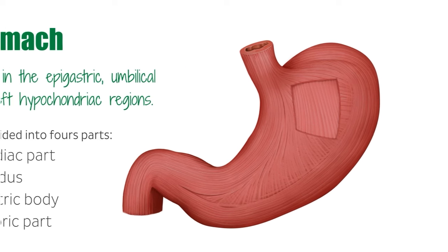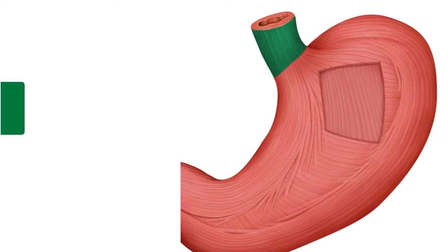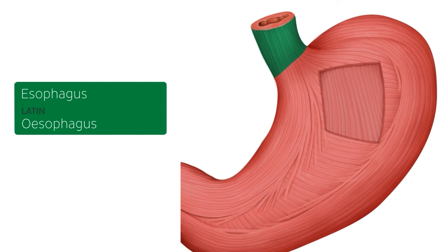When we look at the stomach from an anterior view, like in this illustration, we can see the esophagus is the most superior structure. It connects the stomach with the upper alimentary tract. The esophagus is a long fibromuscular tube that connects the pharynx to the stomach. It passes through the superior and inferior posterior sections of the mediastinum, then enters the abdominal cavity through the esophageal hiatus of the diaphragm at approximately the level of the T10 vertebra.